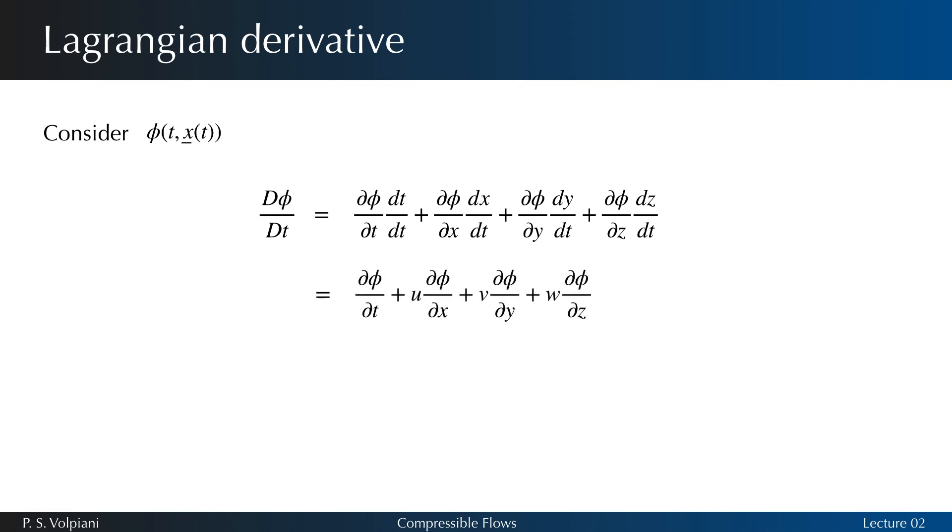This tells us that the total rate of change of quantity phi, as the fluid parcel moves through a flow field, is equal to the sum of the local rate of change and the convective rate of change of phi.